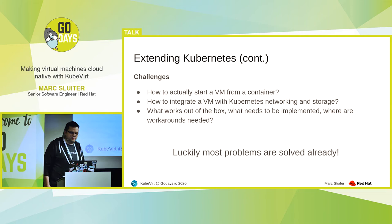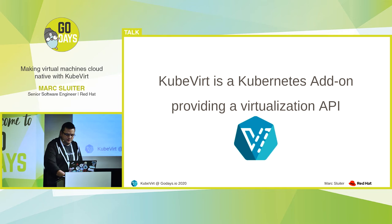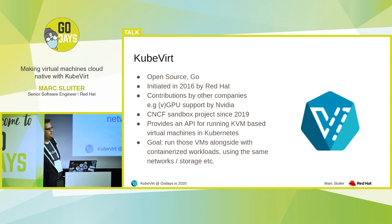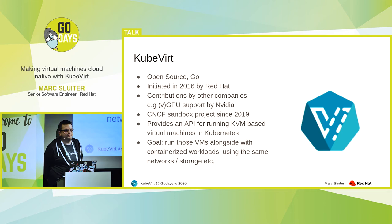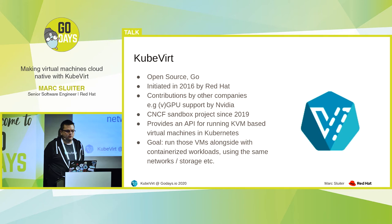Luckily, most problems are solved already. And this is where KubeVirt enters the game. KubeVirt is an open source project implemented in Go. It was initiated in 2016 by Red Hat, but there are also contributions by other companies — for example, NVIDIA added GPU support for virtual machines just a few months ago. Last year, KubeVirt was accepted as a Cloud Native Computing Foundation Sandbox project. And the goal is to write an API for running KVM-based virtual machines in Kubernetes, and let these VMs run alongside normal containers, using the same network and storage abstraction layers available in Kubernetes.